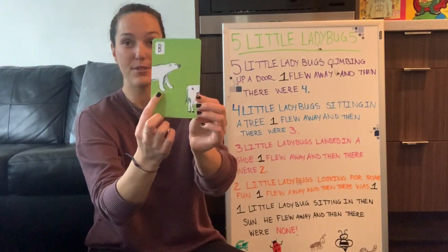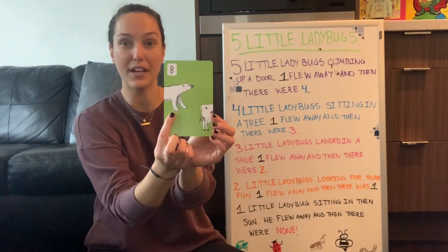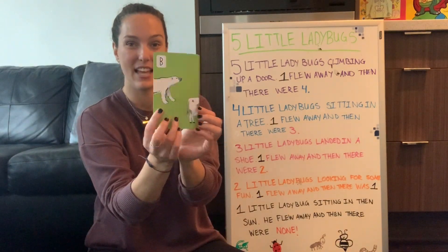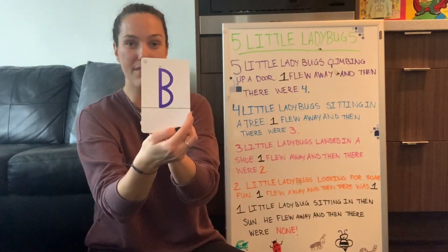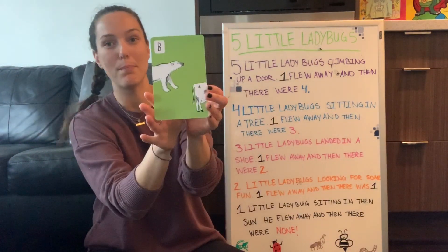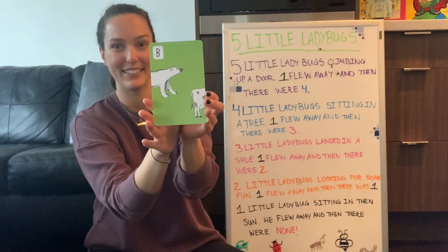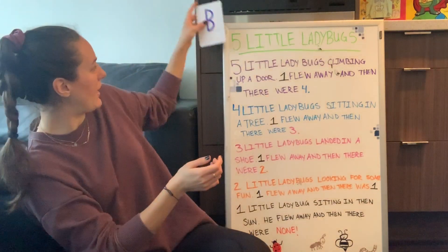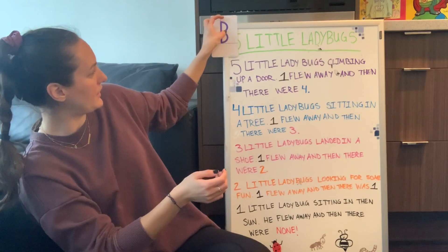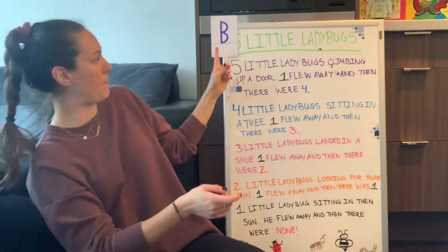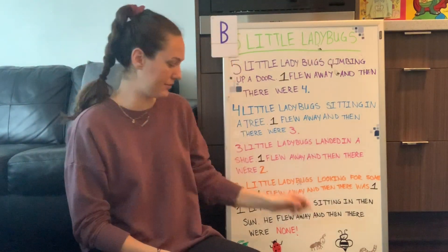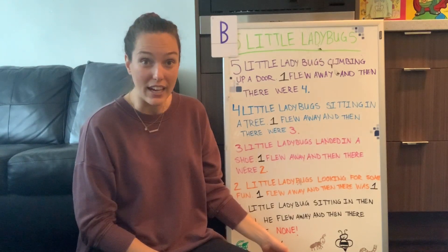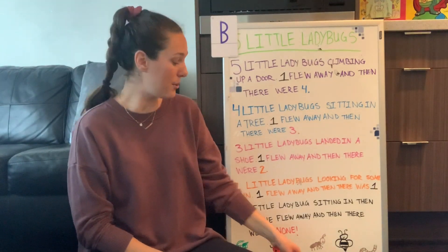Can you say B, B, bear? Amazing! B is for the animal bear. So we'll put our letter here — B is for bear. B is also for bug. So cool!